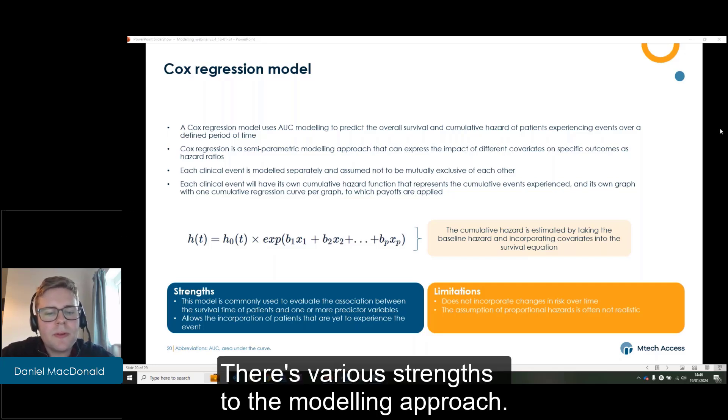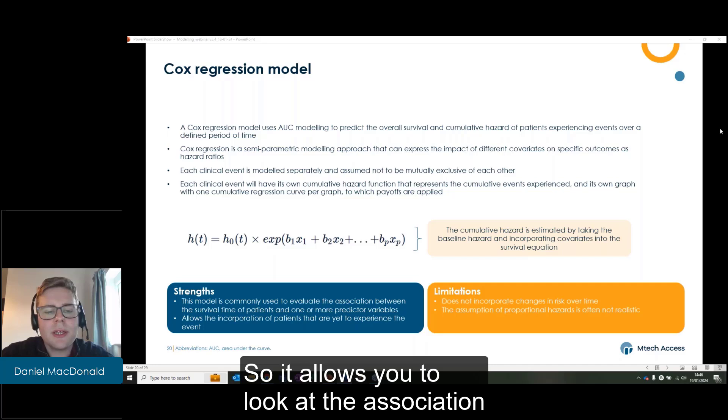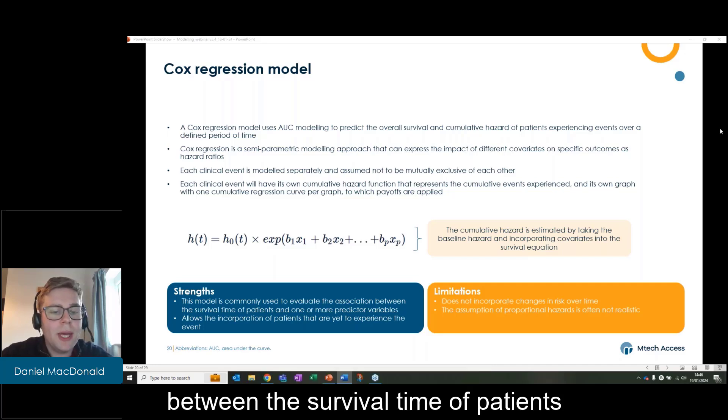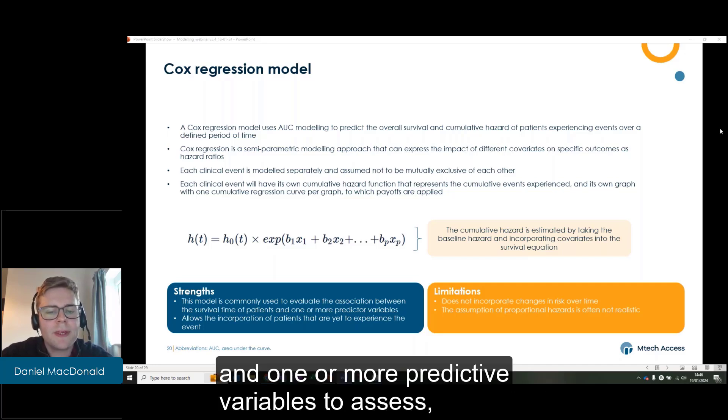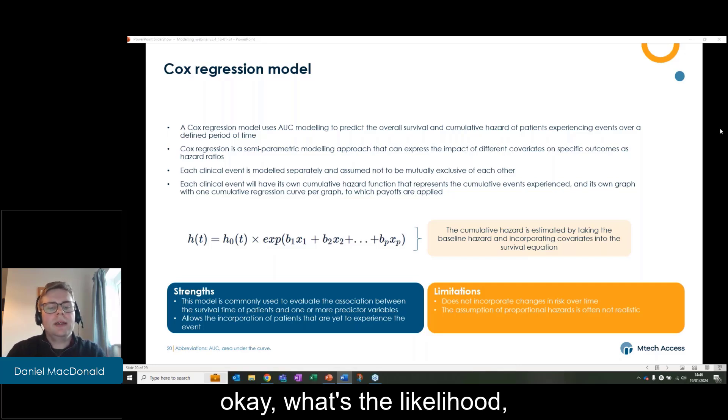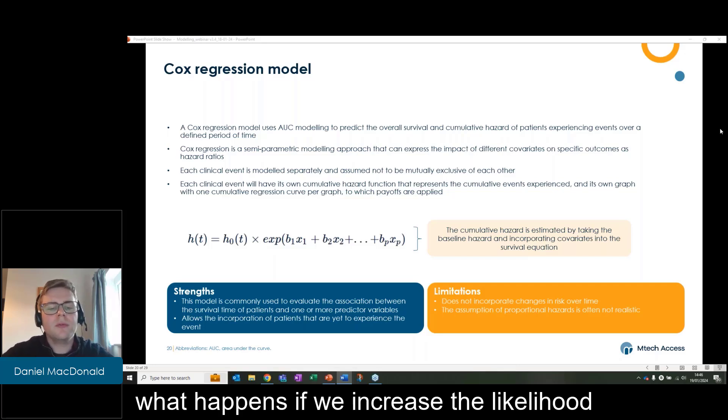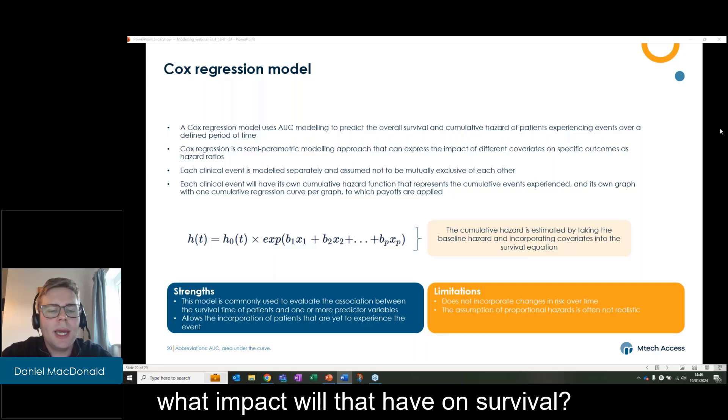There's various strengths to the modeling approach. It allows you to look at the association between the survival time of patients and one or more predictor variables to assess what's the likelihood. What happens if we increase the likelihood of one variable? What impact will that have on survival?